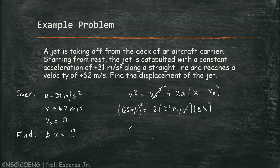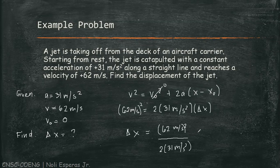Therefore, we can solve for displacement, which equals 62 squared over 2 times 31. Therefore, our displacement is 62 meters.